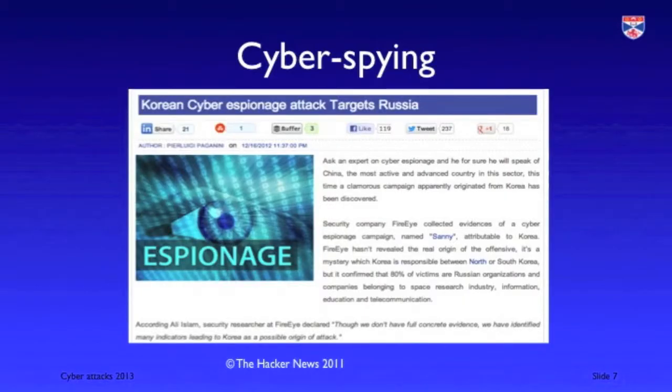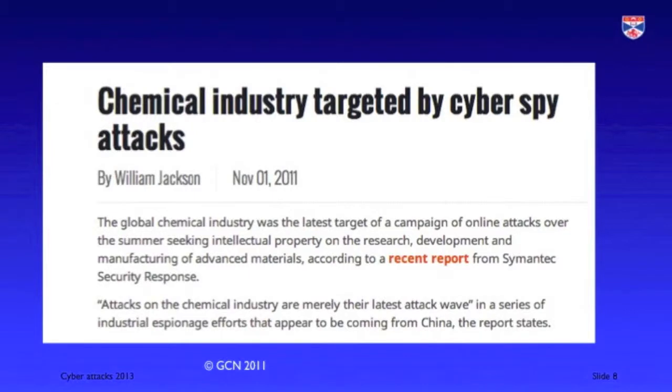This news story is about the suggestion that perhaps North Korea or South Korea were spying on Russia. Another kind of cyber spying, possibly more recent, is cyber spying for industrial espionage, where one industry tries to collect the trade secrets of another. Sometimes this is done at a nation-state level, where one nation sponsors cyber espionage to collect information that would benefit their industries. This is illustrated by an example of a cyber spying attack on a chemical company.